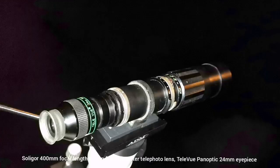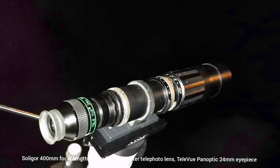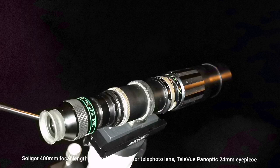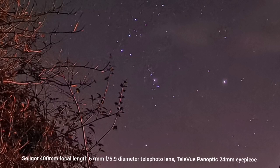The first telescope I'm using is the SLR old lens, a solid gold lens, 400mm focal length and 67mm aperture. I'm using a TeleVue Panoptic 24mm eyepiece.